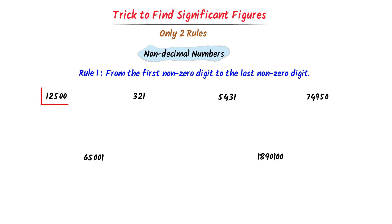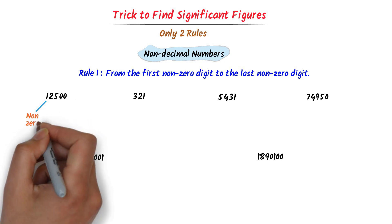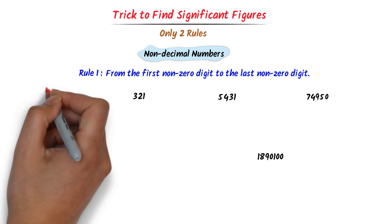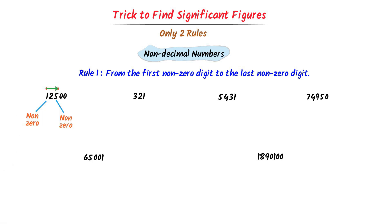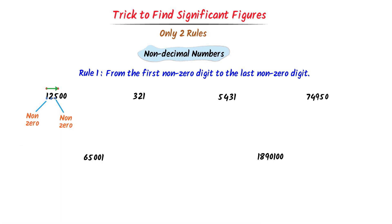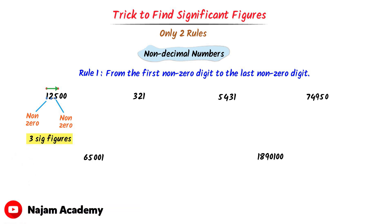In case of the first number, we can see that the first non-zero digit is 1 and the last non-zero digit is 5. So I go from 1 to 5. We can see there is 1, 2, and 5 — there are 3 digits from first non-zero digit to the last non-zero digit. So there are 3 significant figures.